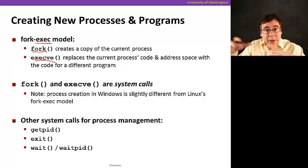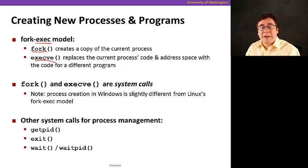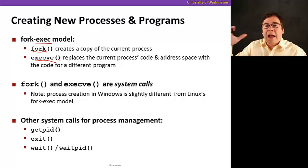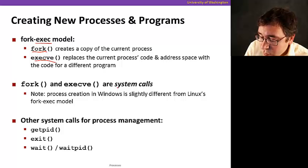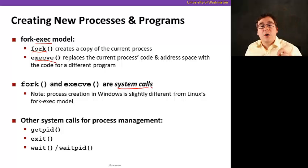Fork creates a copy, an entire copy of the current process, and execv replaces the code and the data and the address space of the process with the code for a different program. And these two services we call system calls.